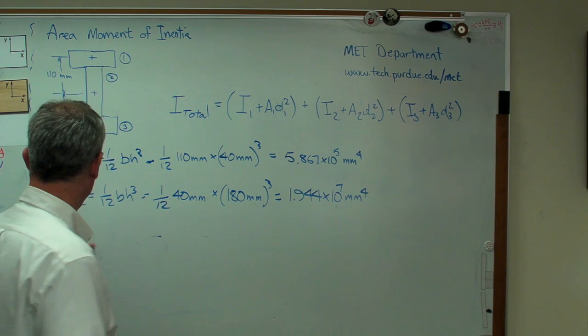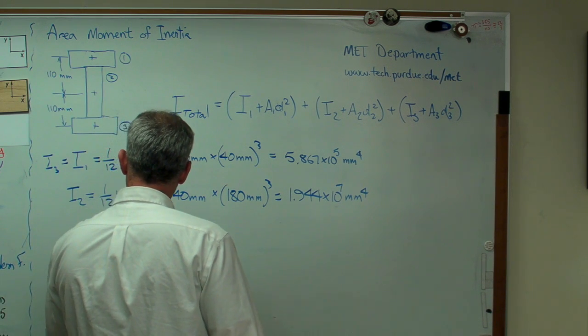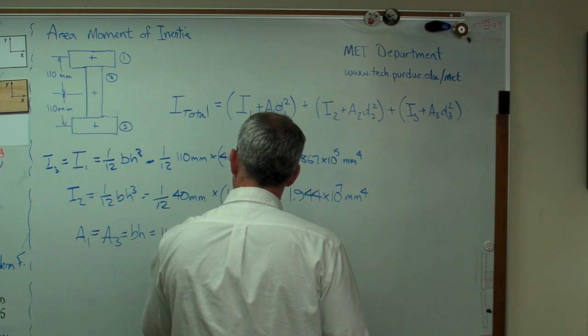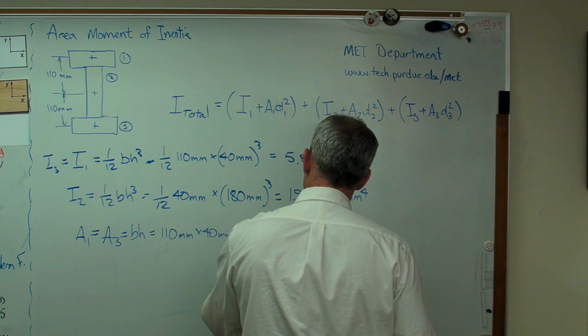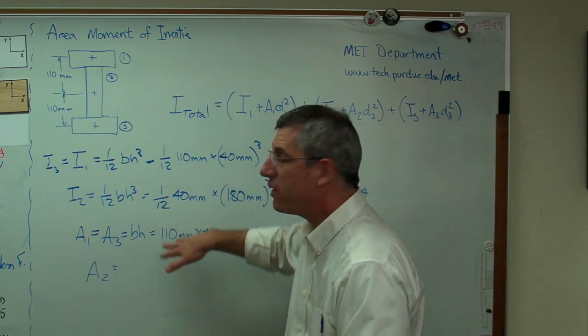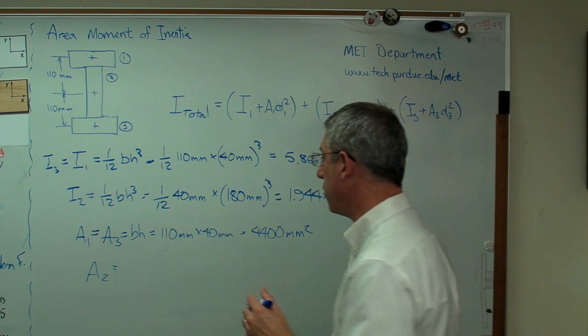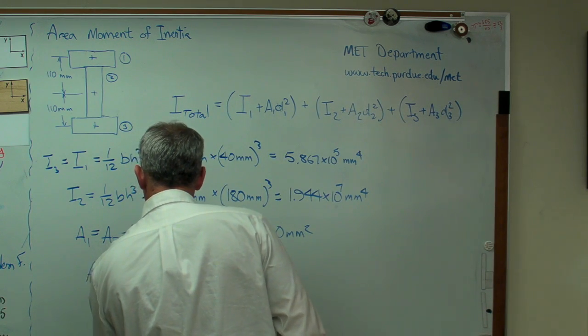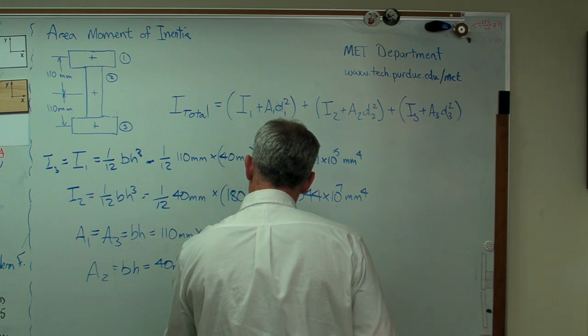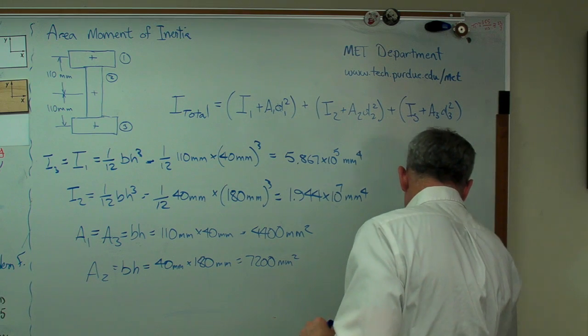Next thing we're going to need to know is the area of the two different types of boxes. A1 and A3 are going to be the same. That's just the base times the height, so that's 110 millimeters times 40 millimeters, which should be 4,400 millimeters squared. And A2, we're just doing this over and over again. This actually starts looking a lot like a spreadsheet. You can just about calculate this using Excel or some other spreadsheet program if you like. That's also bh, so that's 40 millimeters times 180 millimeters, which is 7,200 millimeters squared.